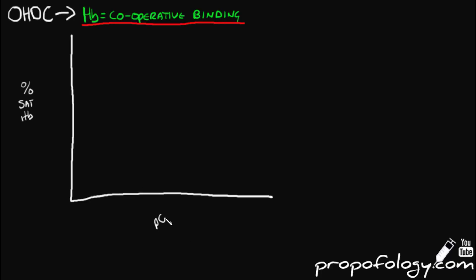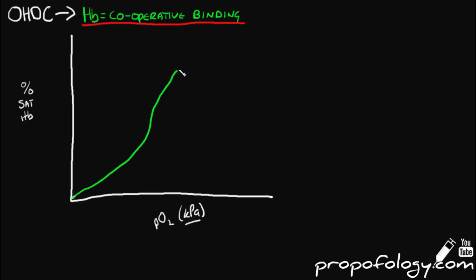We label the axes as percentage saturation of haemoglobin and the partial pressure of oxygen in kPa, but this can also be in millimetres of mercury or pressure of your choice. The first molecule is hard to bind, which explains this slower uptake at the start of the curve. It then becomes easier to bind, which explains this steeper part coming up now. And as the curve plateaus, this is because all the haemoglobin molecules are fully saturated.